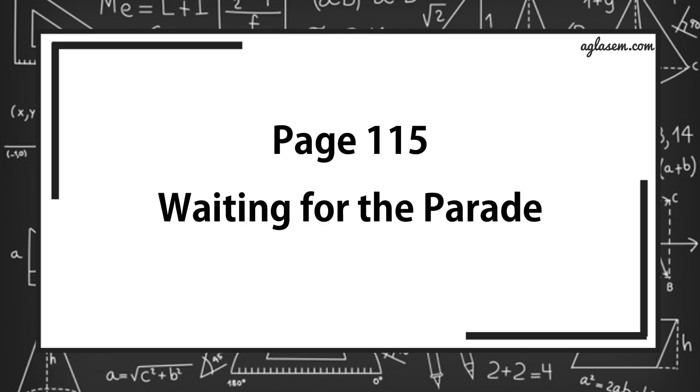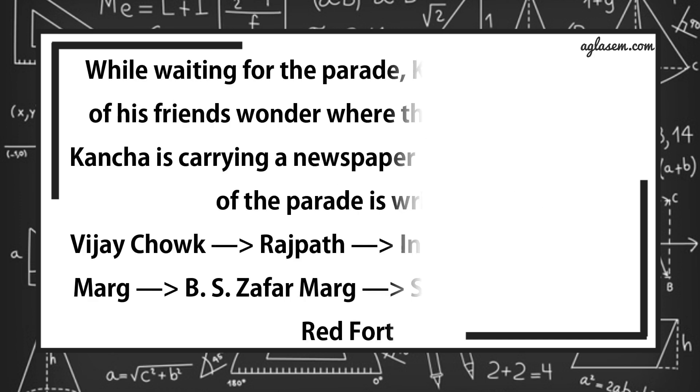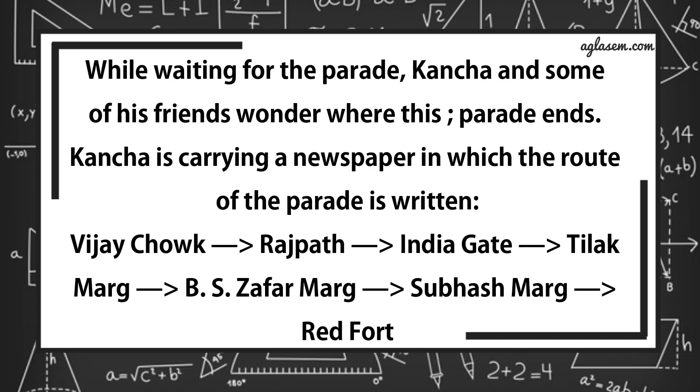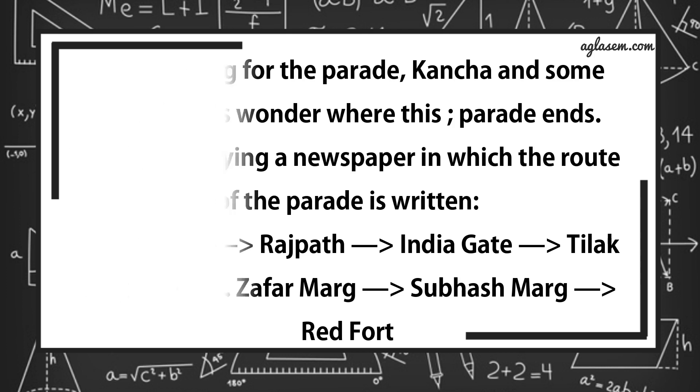Now turn to page number 115. Waiting for the parade. While waiting for the parade, Kancha and some of his friends wondered where this parade ends. Kancha is carrying a newspaper in which the route of the parade is written. That is, Vijay Chowk, Rajpath, India Gate, Tilak Marg, BS Zafar Marg, Subhash Marg, and Red Fort.